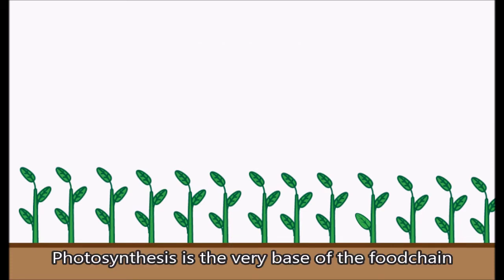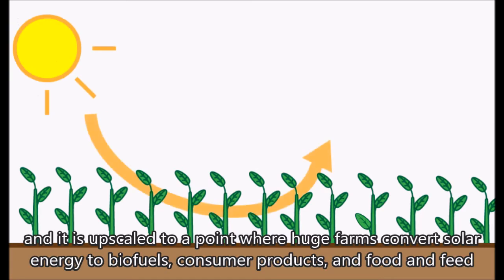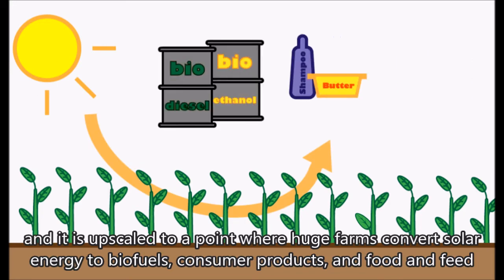Photosynthesis is the very base of the food chain and is upscaled to a point where huge farms convert solar energy to biofuels, consumer products, and food and feed.